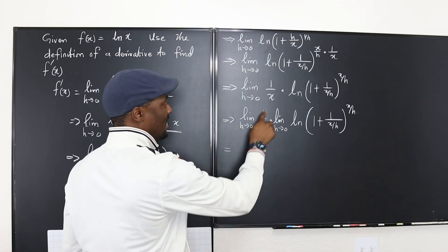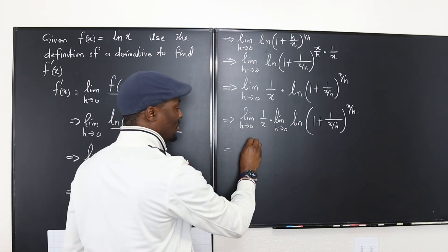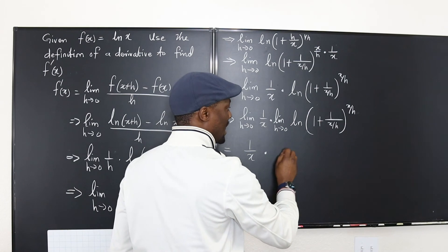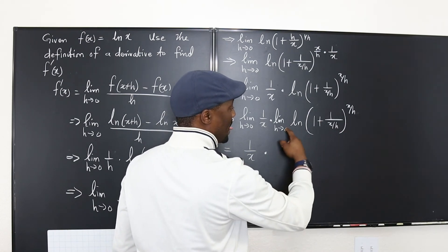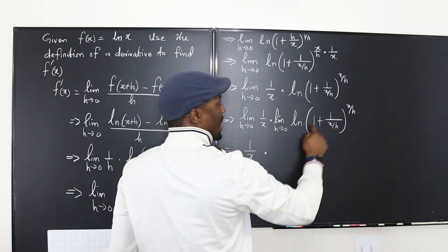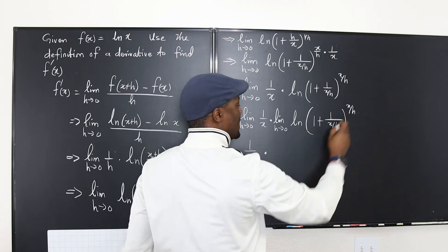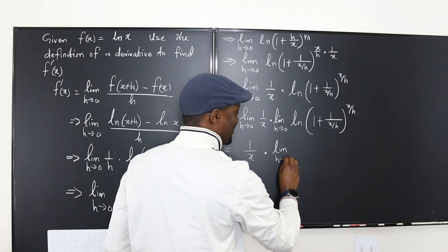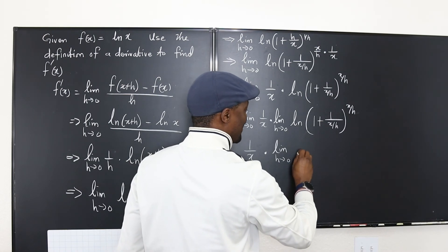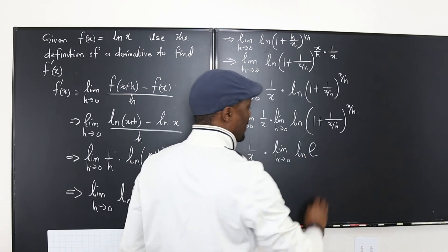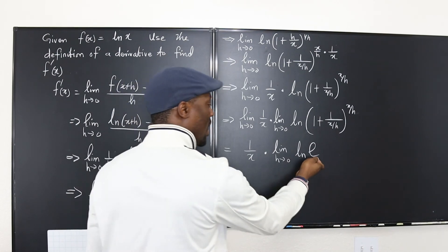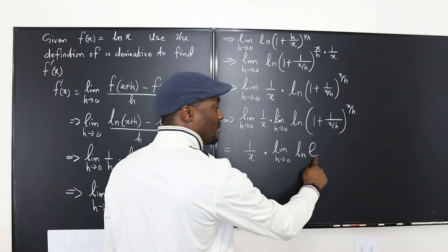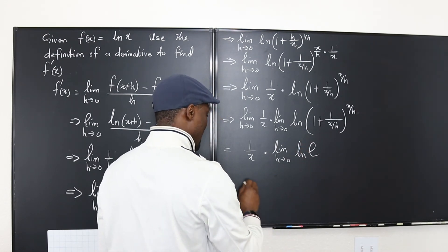So this is going to be the limit of this. It has nothing to do with h. It's going to be 1 over x multiplied by the limit of ln. That's going to be what, this is e. Well again ln of e. Let me write it. The limit as h goes to 0 of ln of e. Well this is a constant so the limit of a constant is a constant. And remember ln of e is 1.